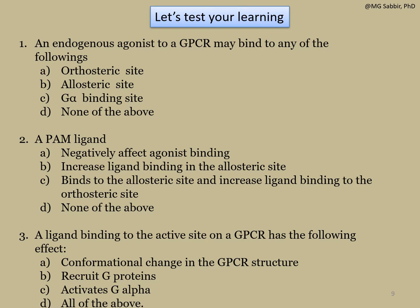Let's solve some more multiple choice questions. Question one: an endogenous agonist to a GPCR may bind to which of the following? Option A: orthosteric site; option B: allosteric site; option C: G alpha binding site; option D: none of the above. Option C is wrong — if an agonist binds to the G alpha binding site it would interfere with trimeric G protein recruitment. Option B is wrong — that is where allosteric ligands bind to exert PAM or NAM. The correct answer is option A: the orthosteric site.